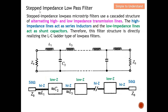Step impedance low pass microstrip filters use a cascade structure of alternating high and low impedance transmission lines. For example, you cascade high and low, high and low, high and low all the way. The high impedance line acts as a series inductor, and the low impedance line acts as a shunt capacitor. This structure directly realizes the LC ladder type of low pass filter.